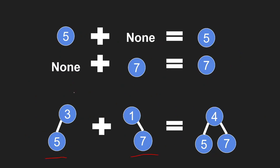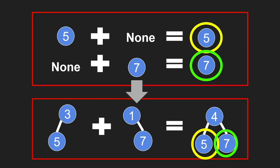Let's look at a simpler example. We have a root of three with a left child of five, and another tree with a root of one and a right child of seven. Overlapping them: three and one add to give us four. The five has no corresponding node, so we just keep five. The seven has no corresponding node either, so we keep seven. The result is four as the root with five and seven as children.